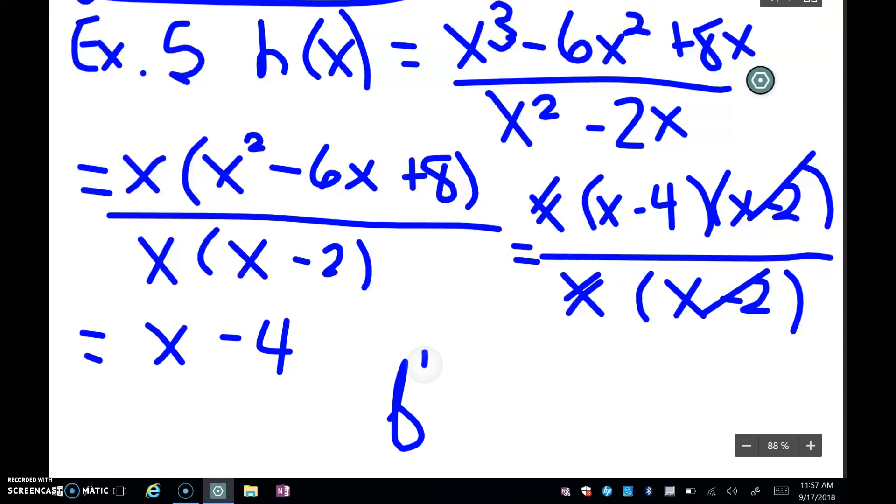So now I'm going to do my derivative because it's in the proper form. The derivative of x is 1 and the derivative of a constant, the negative 4 here, is just 0. So my answer is 1.